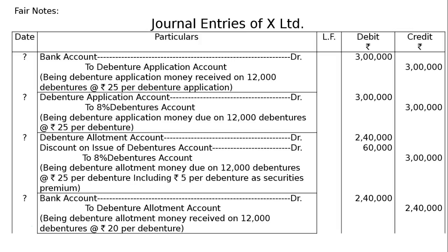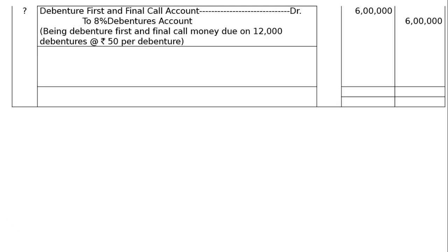Next entry — first and final call due: Debenture First and Final Call Account debited to 8% Debentures Account — being debenture first and final call money due on 12,000 debentures at the rate of ₹50 per debenture. 12,000 × ₹50 = ₹6,00,000 in both debit and credit columns.